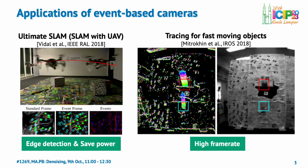For example, there are studies that apply event-based cameras to SLAM using UAV or drone aerial photography, and to the tracking of objects moving extremely fast. In the SLAM application, event detection is used for feature-point matching, and the low battery consumption becomes a significant advantage when mounting on drones. For object tracking, they successfully track fast-moving objects without the need for high-speed cameras, which are an order of magnitude more expensive than an event-based camera.